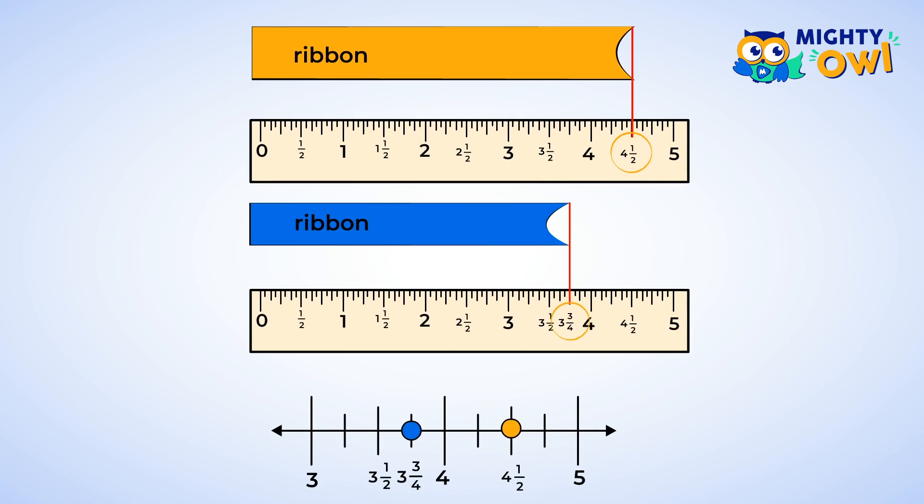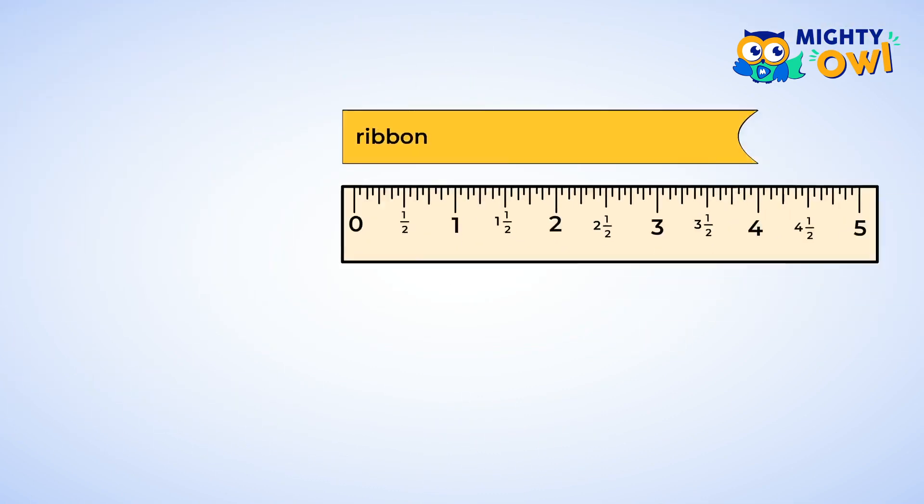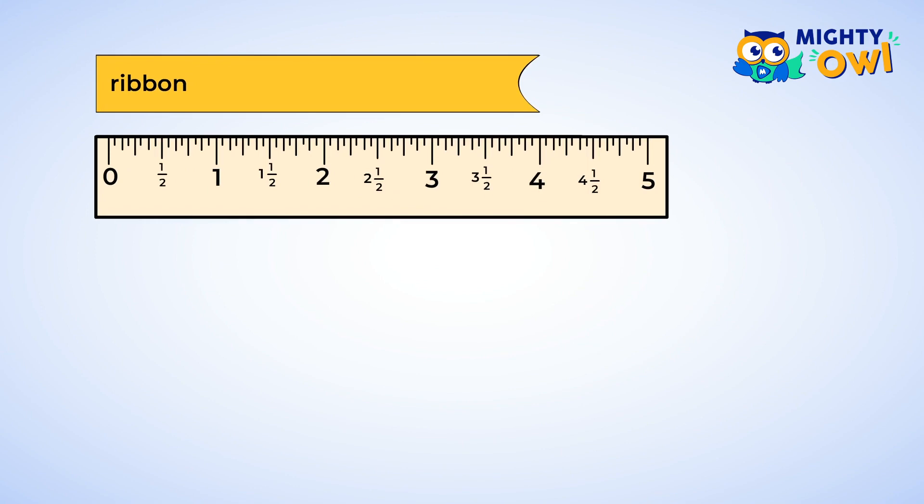And now, let's measure one more before filling in the graph. This ribbon stops right at the four. It's exactly four inches long. Now, let's add it to our line plot. Now, let's just jump ahead for a second and see what the line plot would look like after we measured all of our lengths of ribbon.